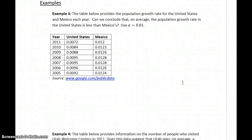In example 3, we have a table that provides the population growth for the United States and Mexico each year, and we're asked if we can conclude that, on average, the population growth rate in the United States is less than Mexico's. So the first step for this process is to assess the normality of each data set, since the sample sizes are too small.